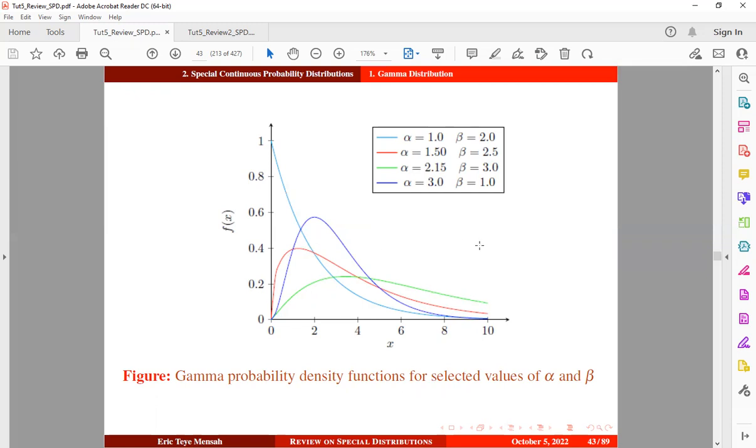Now there are some special cases of the gamma distribution. When we set alpha to 1 for any value of beta, we obtain the special case of the gamma distribution known as the exponential distribution. So we can see that this is in the form of exponential decay. And when we set alpha to be a positive integer, then for any value of beta, we also obtain another special case of the gamma distribution known as the Erlang distribution.